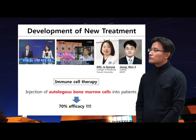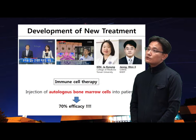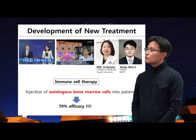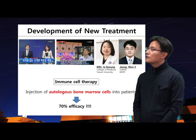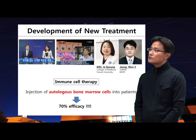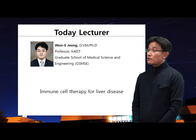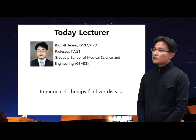There are many scientific efforts to develop new treatments for cirrhosis. Professor Jung Won Il of KAIST and Kim Ja-Kyung of Yonsei University College of Medicine have developed a new and novel treatment for liver cirrhosis using immune cell therapy. Autologous bone marrow cells were transplanted into cirrhosis patients; these bone marrow cells increased production of cytokines that inhibit hepatic stellate cells from secreting collagen. In this clinical trial, the immune cell therapy was effective in improving 70% of cirrhosis patients. Today's speaker, Professor Jung Won Il of KAIST Graduate School of Medical Science and Engineering, will give us a lecture on immune cell therapy for liver disease. Thank you for listening.